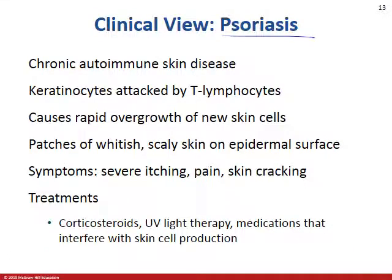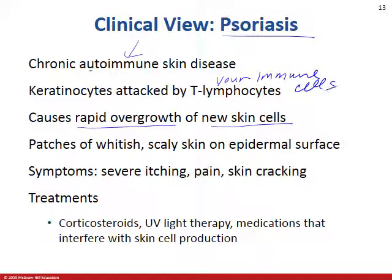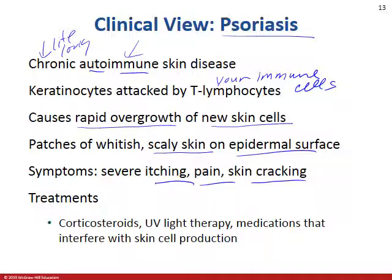Psoriasis is something we see quite often clinically. It's basically an overgrowth of skin — a rapid overgrowth of new skin cells when your immune cells start attacking the keratinocytes. That's why it's autoimmune — you're attacking yourself — and it's chronic, meaning lifelong. Your immune system sees your own skin cells as foreign invaders, causing rapid overgrowth. You see scaly skin on the epidermal surface; it can itch, cause pain, and cause the skin to crack. There are several different treatments available for psoriasis.